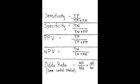What is the equation of specificity? Specificity is true negative over true negative plus false positive.